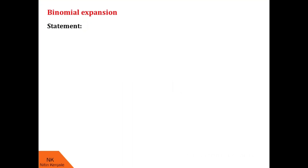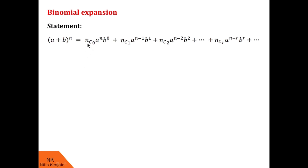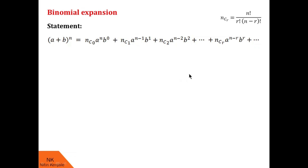Binomial expansion states that (a + b) raised to n, for n a positive integer, is nC0 · a^n · b^0, plus nC1 · a^(n−1) · b^1, plus nC2 · a^(n−2) · b^2, and so on. It has n+1 terms, where nCr is given by n! / (r! · (n−r)!). It is quite tedious to use this formula to find these coefficients.